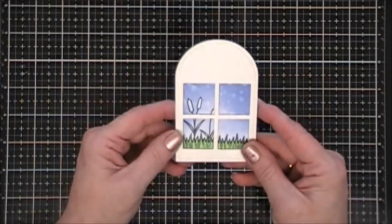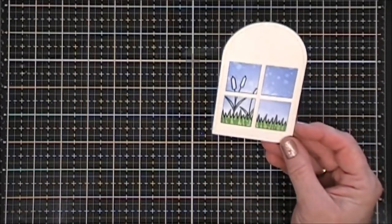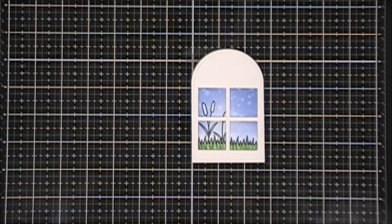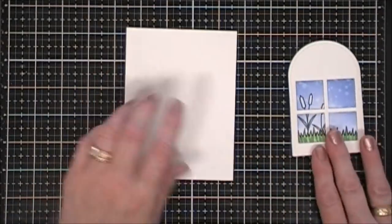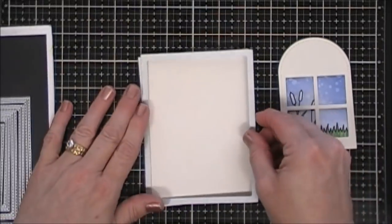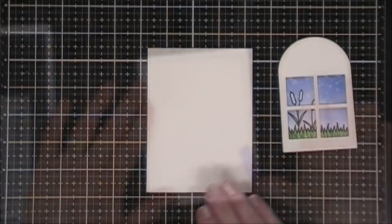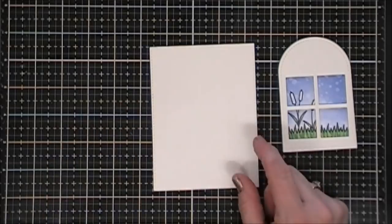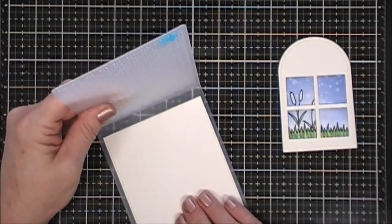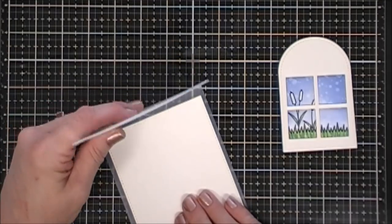Here you can see that center window covered up that second willow, so you could probably skip stamping that second one. That was my second blooper. Next I'm taking a piece of the Very Vanilla cardstock and I'm going to cut out a panel that's 4 inches by 5 and a quarter.